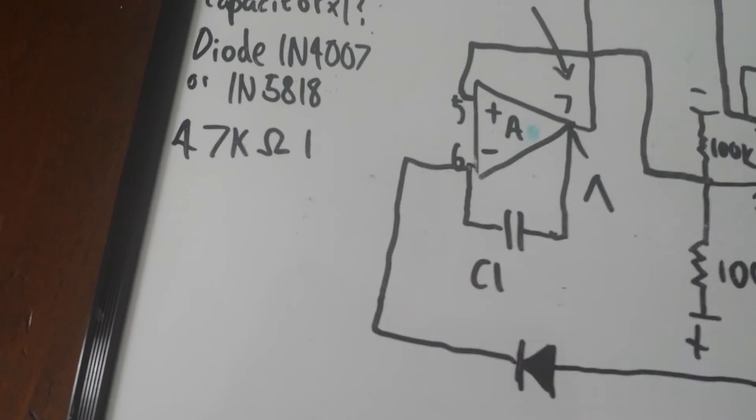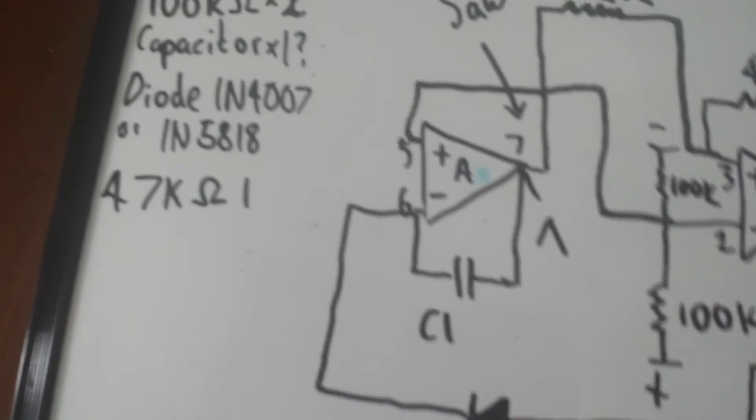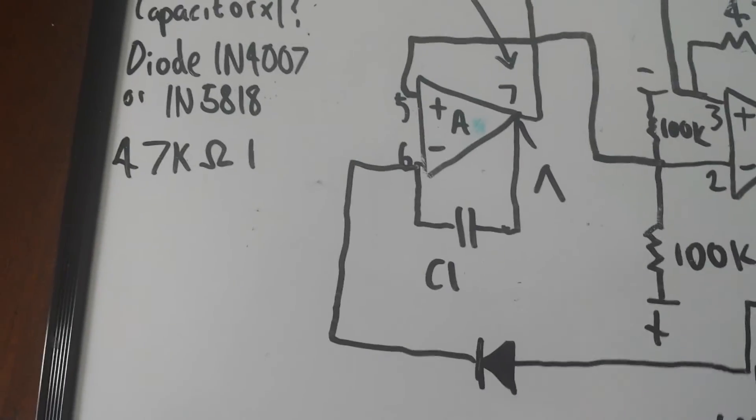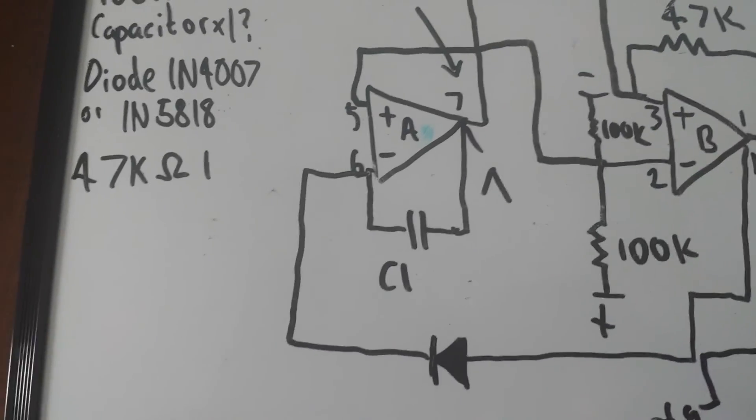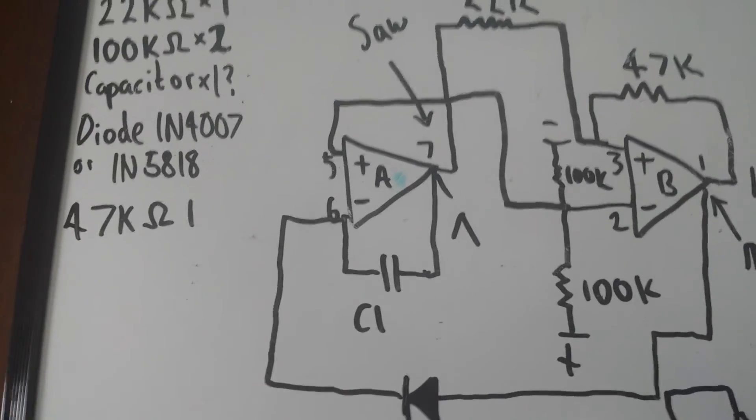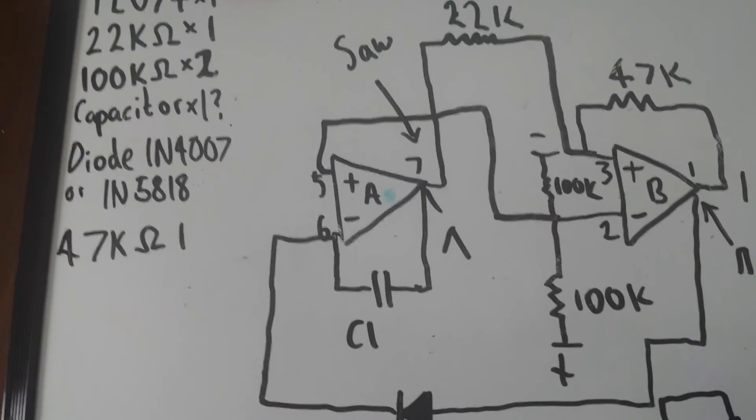This capacitor here, when I first built the oscillator, I used a 104, which is about 0.1 microfarads, and you get quite a good range but not a very high range.